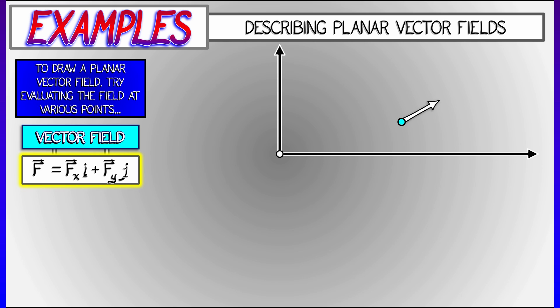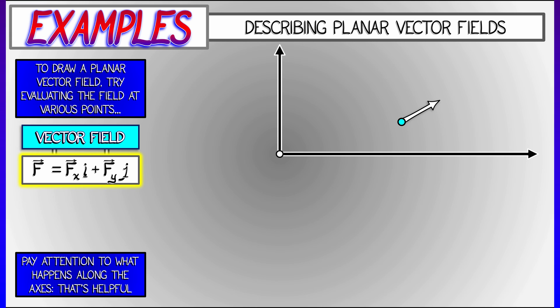Now when you're doing this, there are lots of points to draw. You probably want to pay attention to what is happening along the x or y axes. Because this is very nice, one of those coordinates is equal to zero. It tends to be really easy to evaluate points there.